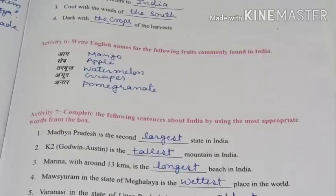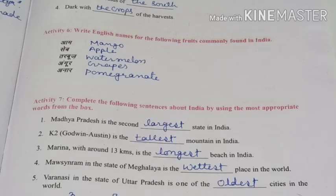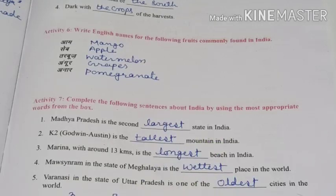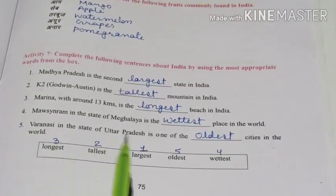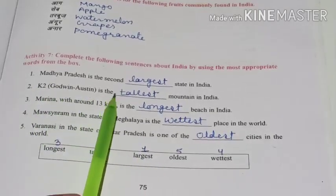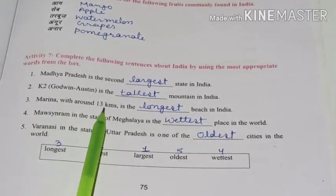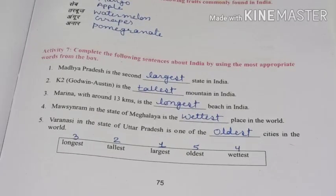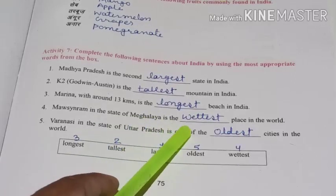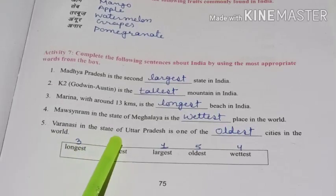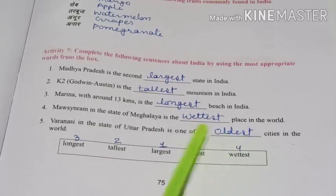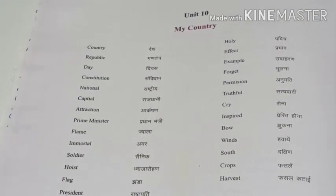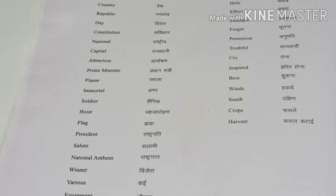Activity 7: Complete the following sentences about India using the most appropriate word from the box. Madhya Pradesh is the second largest state in India. K2 (Godwin Austen) is the tallest mountain in India. Marina beach at around 30 km is the longest beach in India. Mawsynram in the state of Meghalaya is the wettest place in the world. Varanasi in the state of Uttar Pradesh is one of the oldest cities in the world. After completing Activity 7, remember to learn the Unit 10 vocabulary.